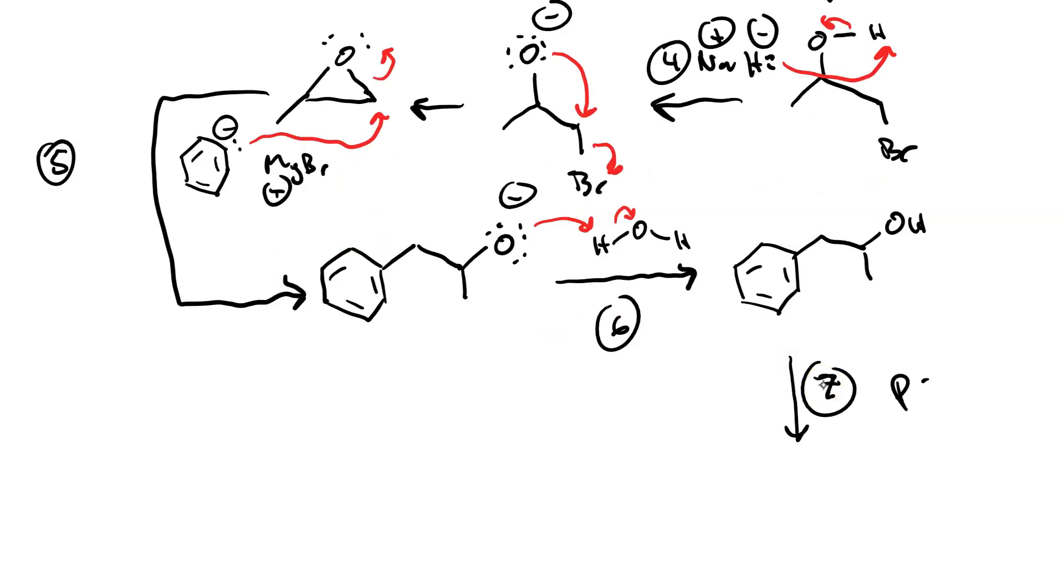Step seven, we use pyridinium chlorochromate. And, we have a ketone.